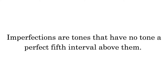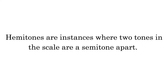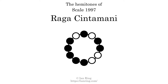Imperfections are tones that have no tone a perfect 5th interval above them. This scale has 3 imperfections. Hammertones are instances where 2 tones in the scale are a semitone apart. This scale has 5 hammertones.